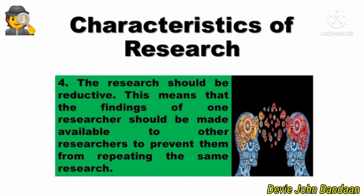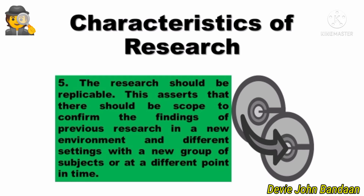Number four: the research should be reductive. This means that the findings of one researcher should be made available to other researchers to prevent them from repeating the same research. That's why in every research there is what we call RRL, or Review of Related Literature. Number five: the research should be replicable. This asserts that there should be scope to confirm the findings of previous research in a new environment and different settings, with a new group of subjects or at a different point in time.